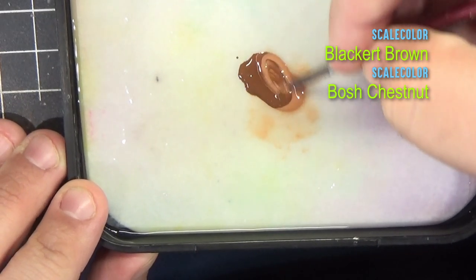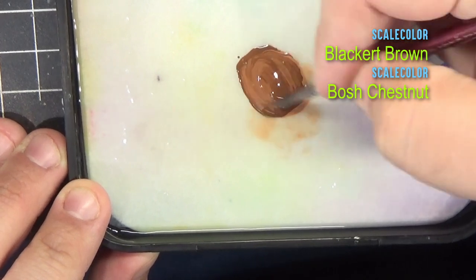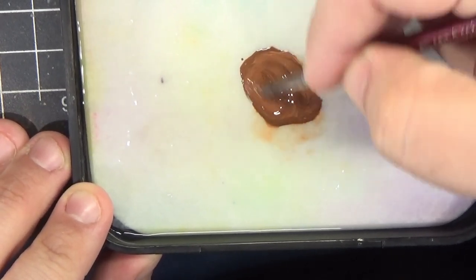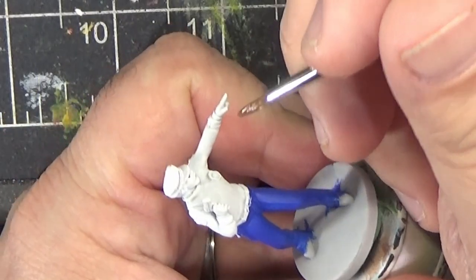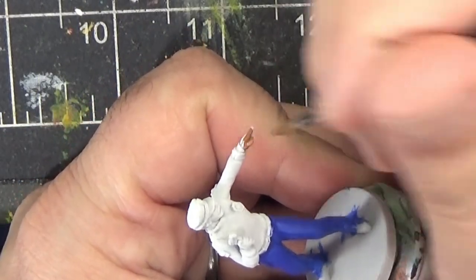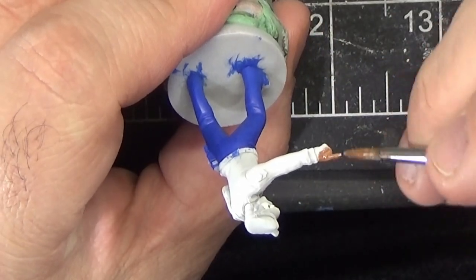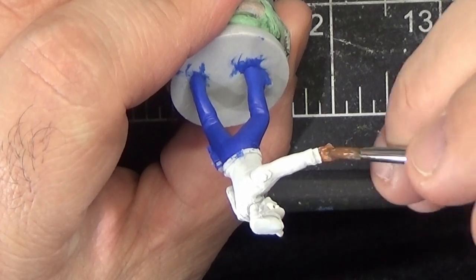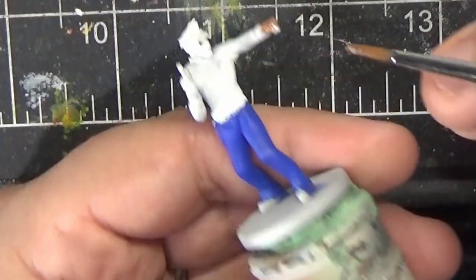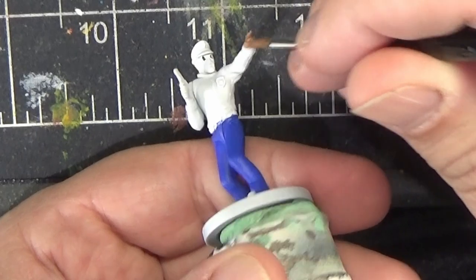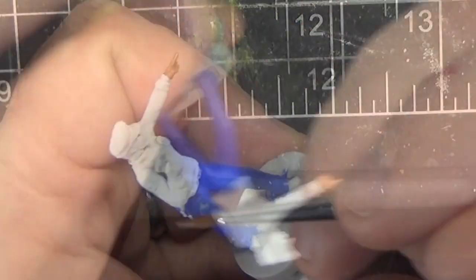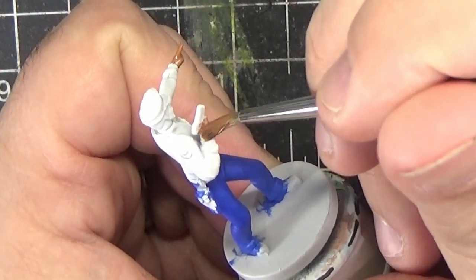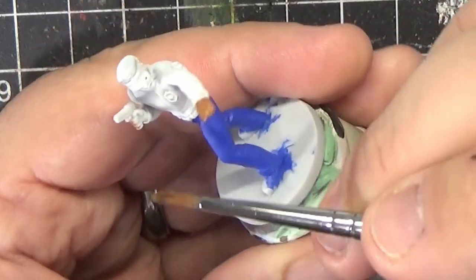Speaking of flesh tones, I'm going to be doing a light-skinned and a dark-skinned version of each sculpt. Here I'm mixing some Bosh Chestnut into some Black or Brown to create a dark skin tone. Obviously we'll be applying this to the hands and face. If you wanted your police officers to be wearing gloves instead, you could use a dark gray or pure black to paint the hands.